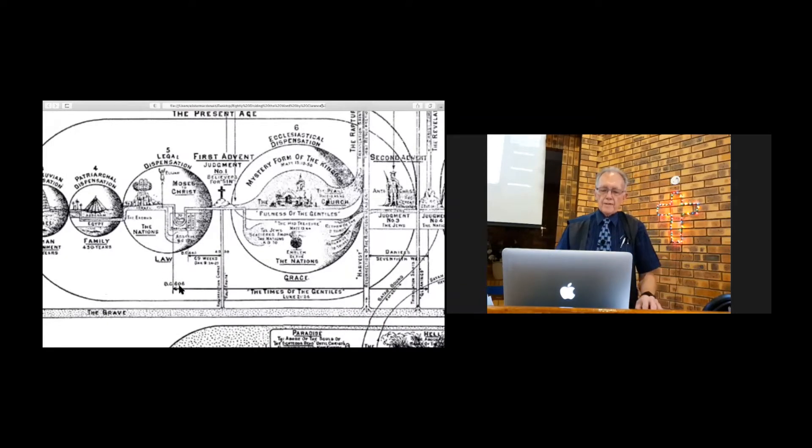And here we have this dispensation of law. This is the captivity of Judah 606, and then you have the return of Judah. Remember, Israel is gone and dispersed among the nations, but Judah, Benjamin, and some Levites return back to Jerusalem. And the seven weeks are the rebuilding of Jerusalem, and then the 69 weeks, the Messiah shall be cut off. And here we have the cross of Calvary, the central thing in God's plan with mankind. And here we have judgment number one. It begins the dispensation of law, and we come to the dispensation of grace.